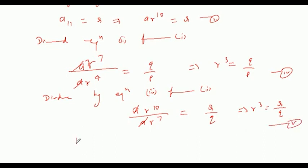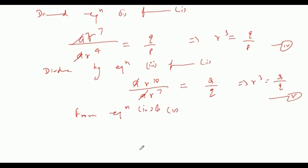From equations four and five, R cubed equals Q by P equals S by Q. Cross multiplying, Q squared equals P times S, which completes the proof.